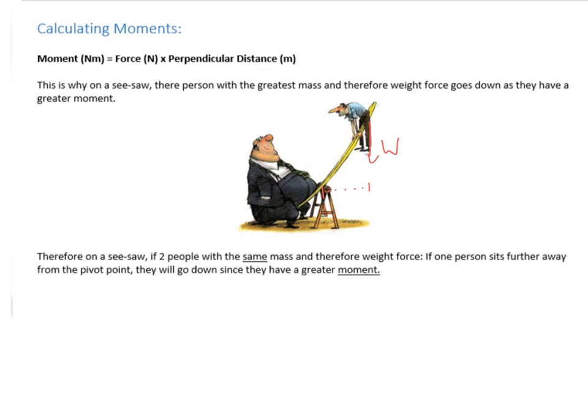And the perpendicular distance from that is this distance here along here. Or the other way of doing it is working out what the component perpendicular to the plank is. So we want to know the weight force in this direction and then the perpendicular distance is the distance along the beam like that.